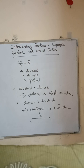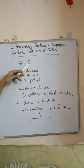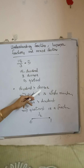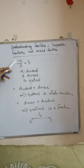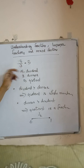Anytime we do division, like 15 divided by 3 equals 5, here 15 is the dividend, 3 is the divisor, and 5 is the quotient. When the dividend is greater than the divisor, the result is a whole number — that is, the quotient is a whole number.